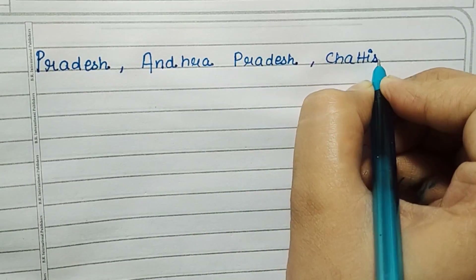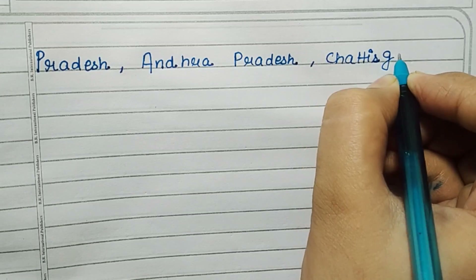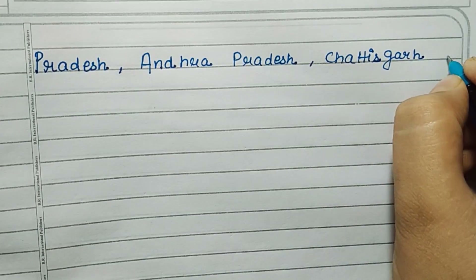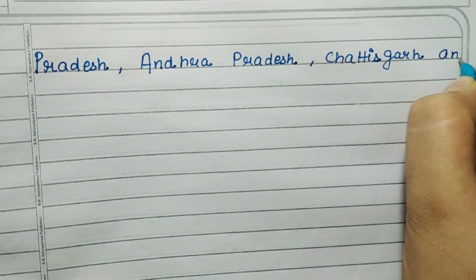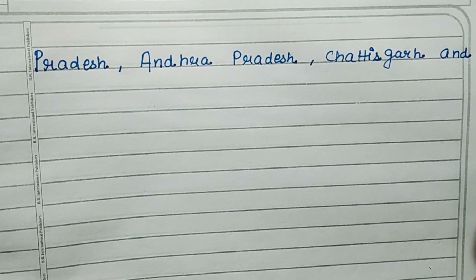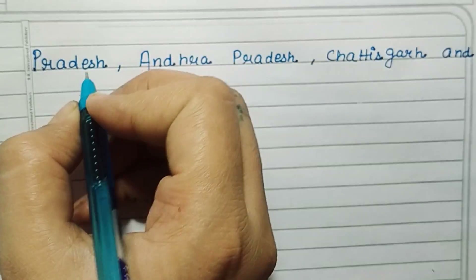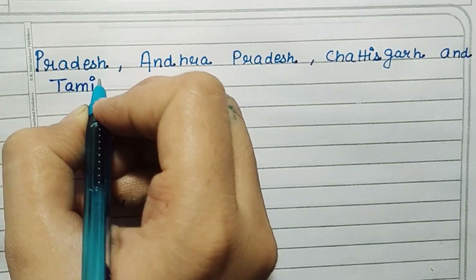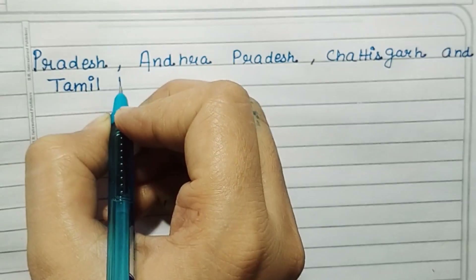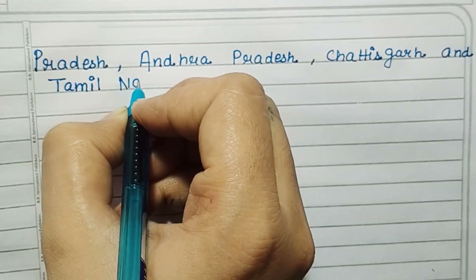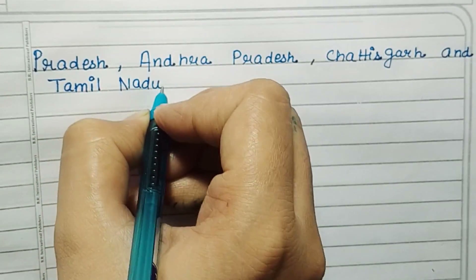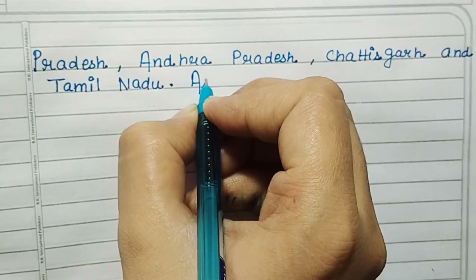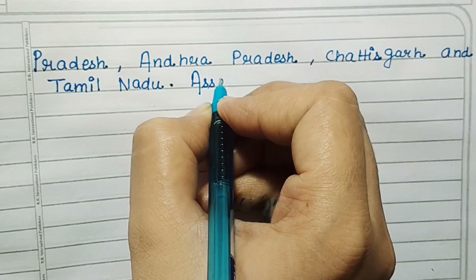Coal is found in Bihar, Jharkhand, Madhya Pradesh, Andhra Pradesh, Chhattisgarh, and Tamil Nadu.